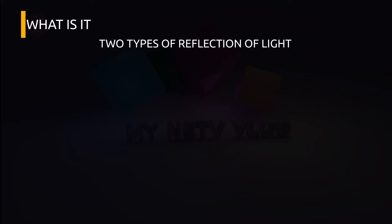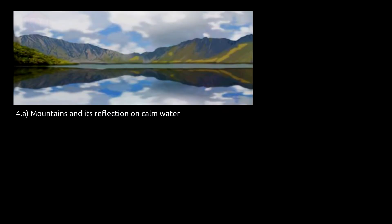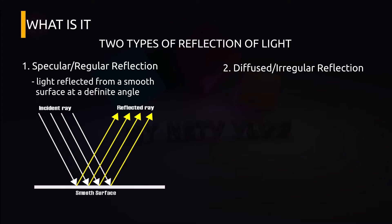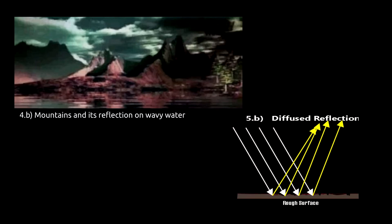There are two types of reflection. The first one is specular or regular reflection. It is defined as light reflected from a smooth surface at a definite angle. Please refer to figure 4.8 and figure 5.8. The second reflection is diffused or irregular reflection. It is produced by rough surfaces that tend to reflect light in all directions. Please refer to figure 4.8 and figure 5.8.